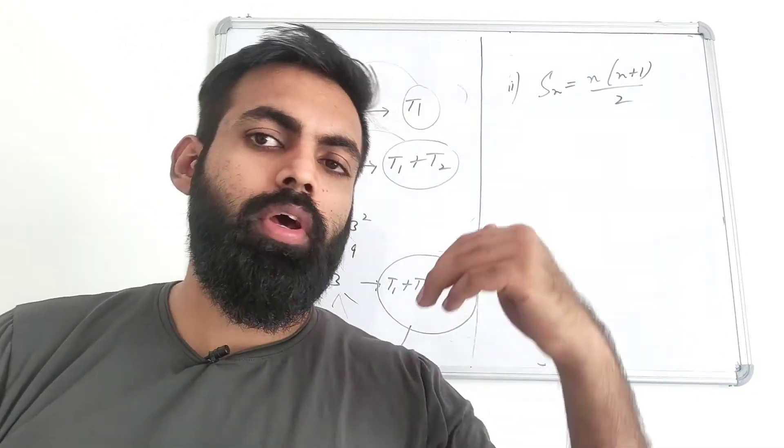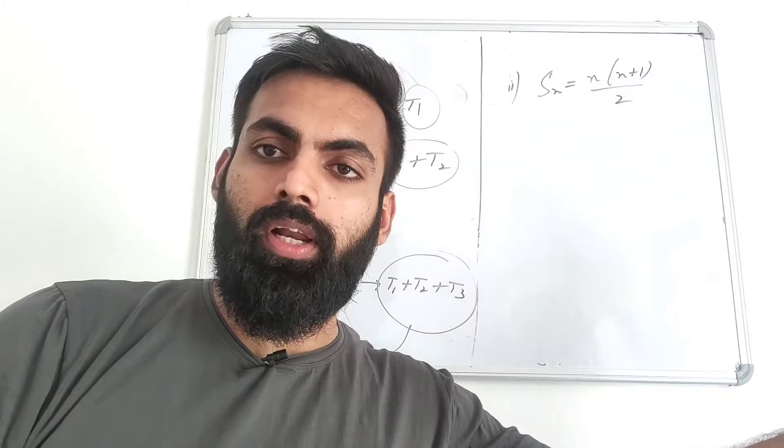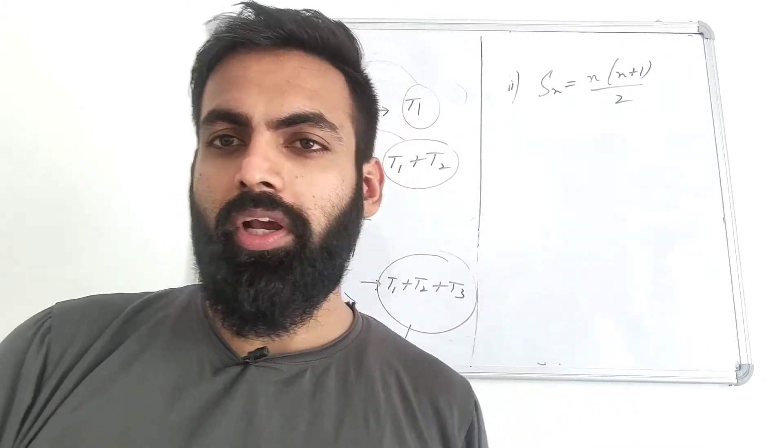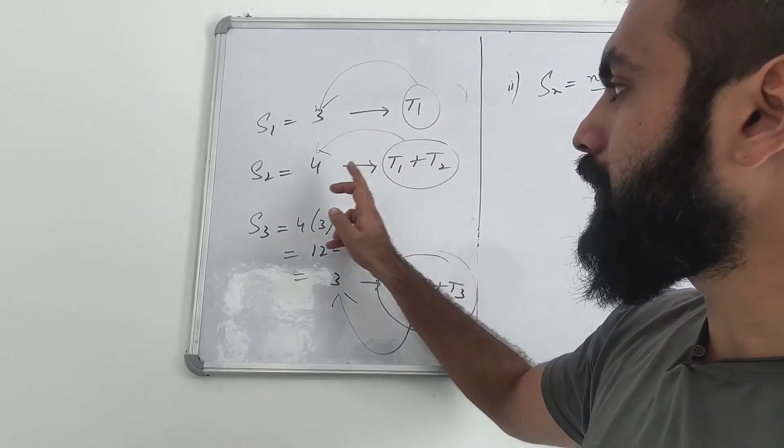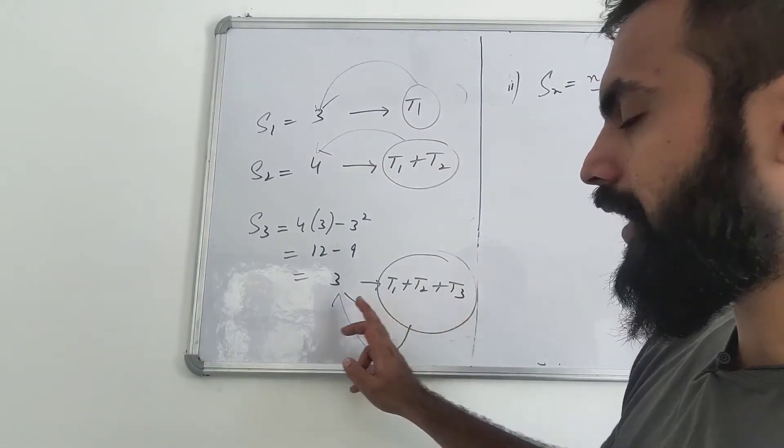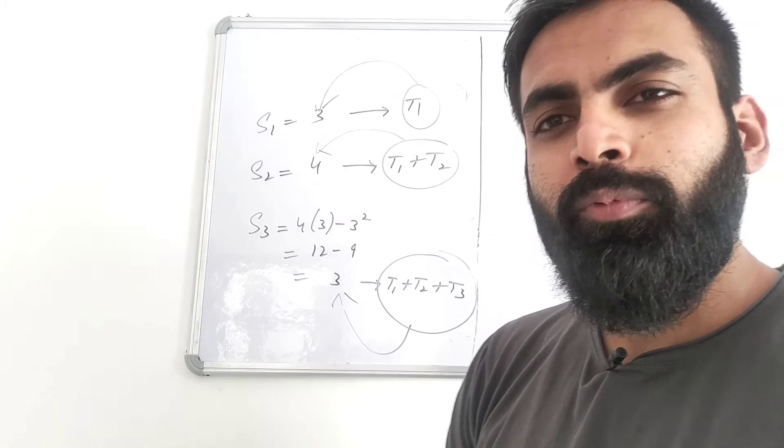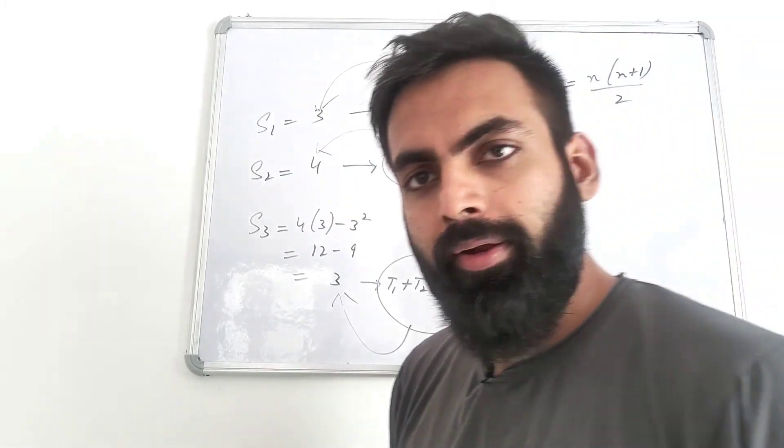How do you do it? Of course, if you put n equals 1, it will be S1. If you put n equals 2, it will be S2. And in this way, you will make equations. You will get T1 value, T1 plus T2 value, T1 plus T2 plus T3 value. And then you will tell me how much T1 is, T2 is, and T3 is. Clear?